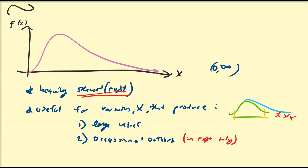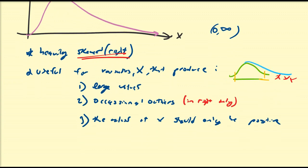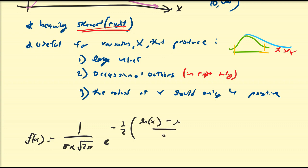If you have outliers that are on the left hand side, then you have to do some algebraic transformations on the function, which we can get into later — but that's a little bit more advanced. And the values of x should only be positive. Because in the actual PDF of the log normal distribution, f of x is going to be equal to 1 over sigma x square root of 2 pi times e to the minus one half times the quantity natural log of x minus mu over sigma, squared. You cannot take the natural log of negative numbers, at least in the real case, which is what we're looking at. So the values of x must be positive.